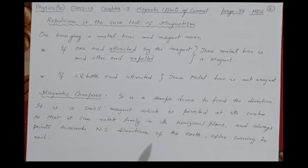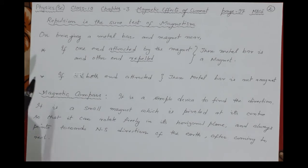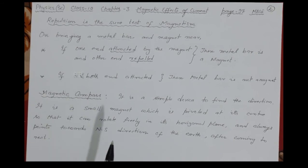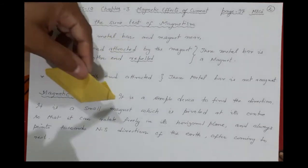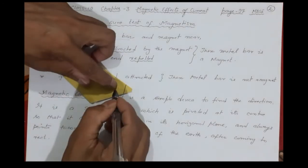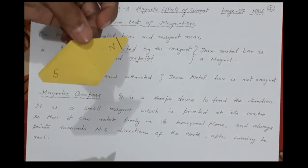Now let us also see what a magnetic compass is. It is a simple device used to find direction. You already know that a magnet has the property to align itself in the Earth's north-south direction, so it is useful in finding direction. It is made from a small magnet with north and south poles.